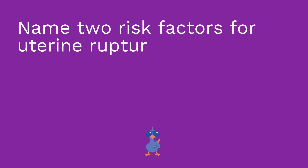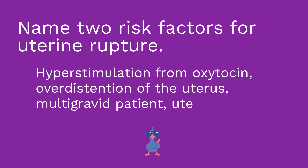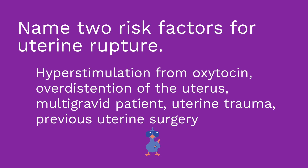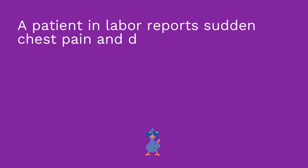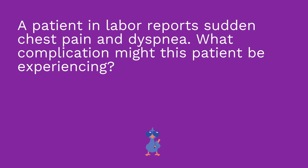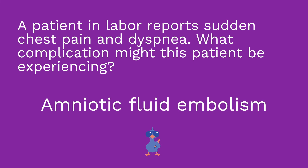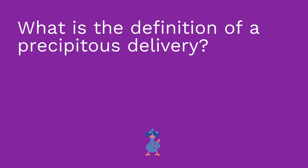First quiz question: name two risk factors for uterine rupture. Second question: you have a patient in labor who reports sudden onset chest pain and dyspnea — what complication might this patient be experiencing? And lastly: what is the definition of precipitous delivery? What qualifies as a precipitous delivery?